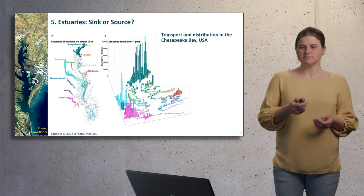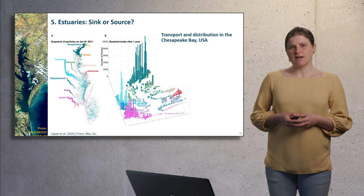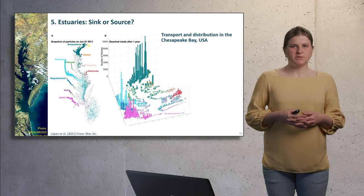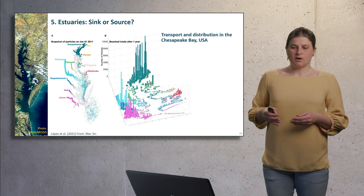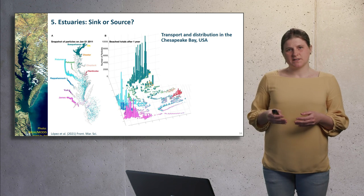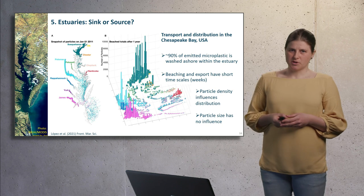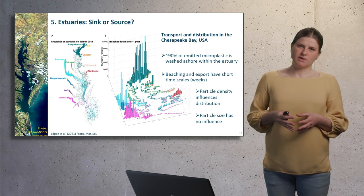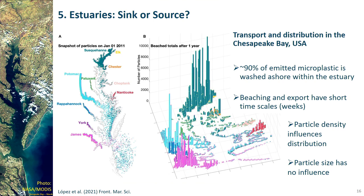In the Chesapeake Bay in the US, a hydrodynamic model coupled with a particle tracking model was utilized to simulate the transport and distribution of microplastics in the estuary. River emissions served as input for the model. The bars on the right map show the beached particles after one year of simulation. According to the model results, right after emission, most of the microplastic particles are washed ashore within a few weeks and about 90% of the microplastics were retained in the estuary. Particle density influenced the distribution — floating particles were more mobile, being in the seaward flowing surface waters — while sinking particles were washed ashore close to their emission source because of being in the bottom water flowing landwards.